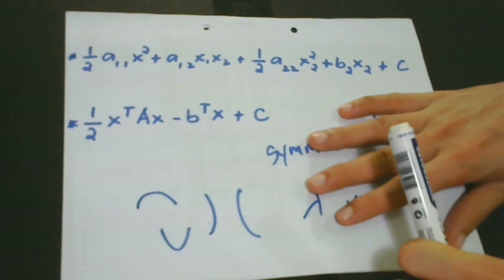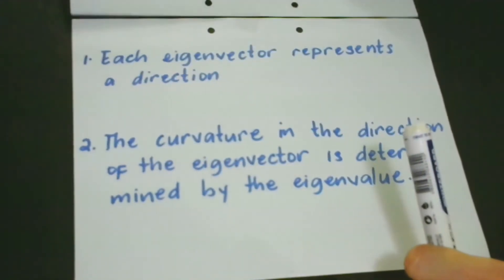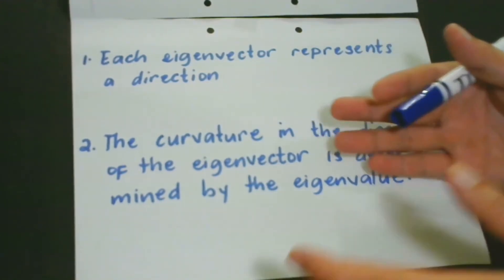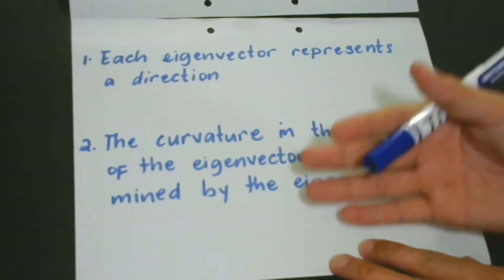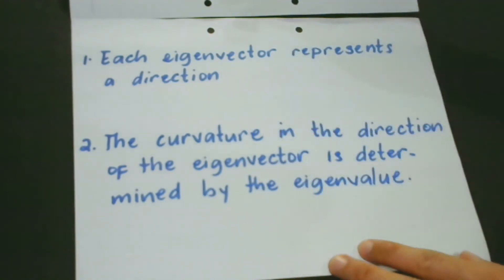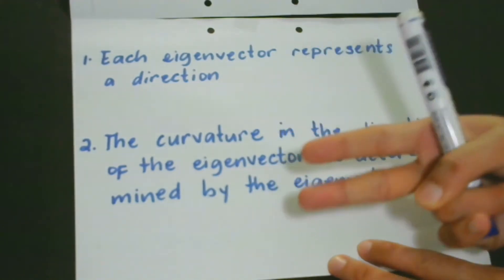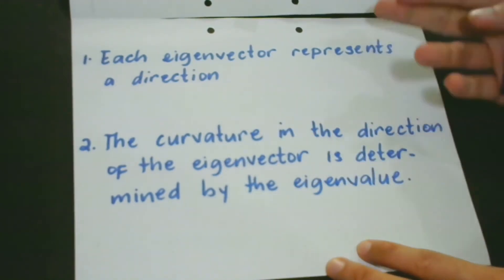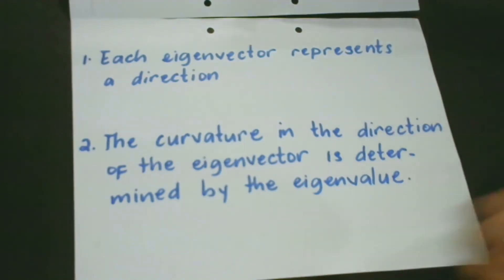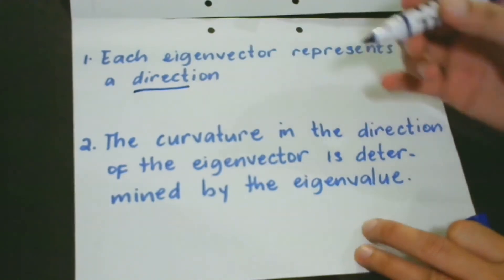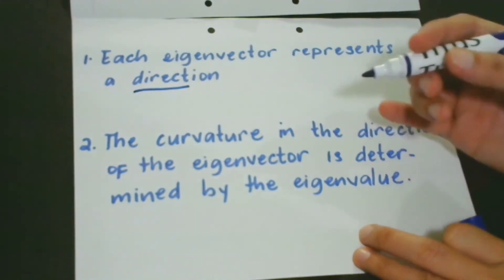As far as the Hessian is concerned, it is very interesting to ask what are the important properties of the eigenvector and the eigenvalues. There are two important properties that we have to take note of. The first one is that each eigenvector represents a direction where a curvature is independent of other directions.